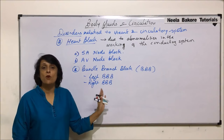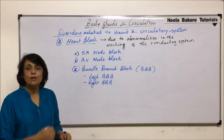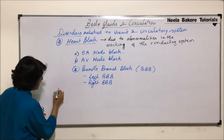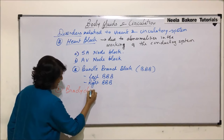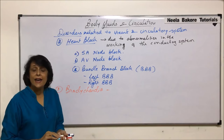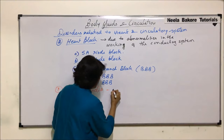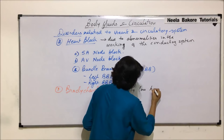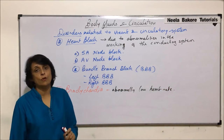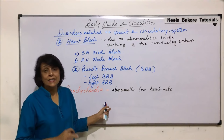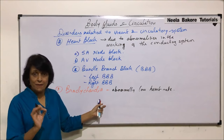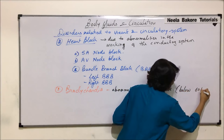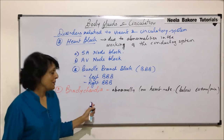These are all disorders associated with abnormalities of the conducting system. Now, regarding rhythmic contraction of the heart, we will take two more conditions. One is bradycardia, in which the heart rate is abnormally low. The normal heart rate is 72 times per minute. If this number falls below 60 beats per minute, that condition is called bradycardia.